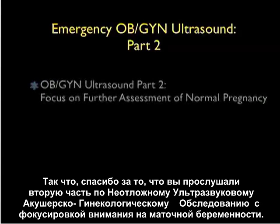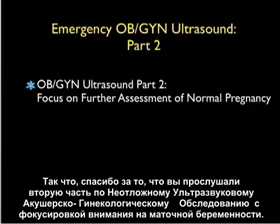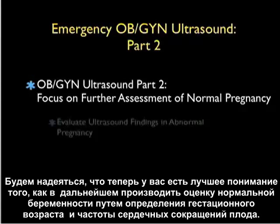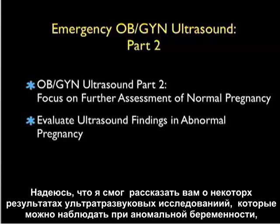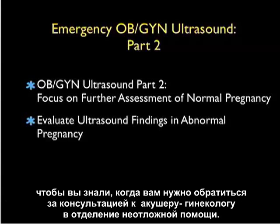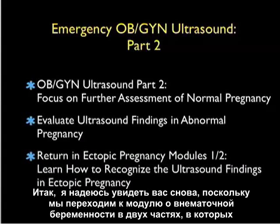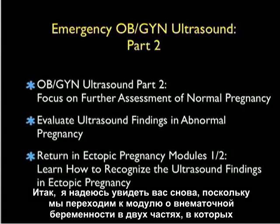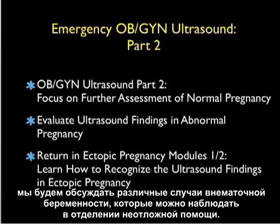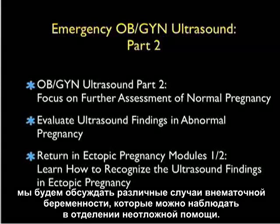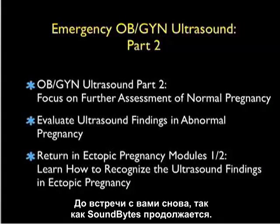Thanks for tuning in to Part 2 of Emergency OB-GYN Ultrasound focusing on intrauterine pregnancy. Hopefully you now have a better understanding of how to assess a normal pregnancy by determining gestational age and fetal heart rate, as well as the ultrasound findings of abnormal pregnancy to know when to get an OB-GYN consultation in the ED. I hope to see you back as we move on to ectopic pregnancy in two modules discussing various findings of ectopic pregnancies in the emergency department.